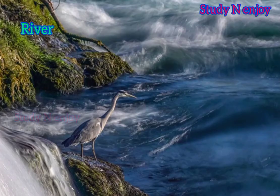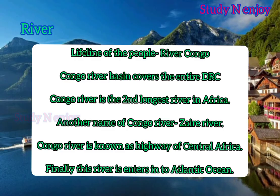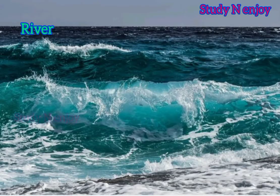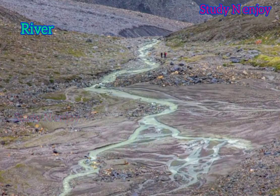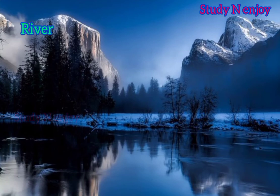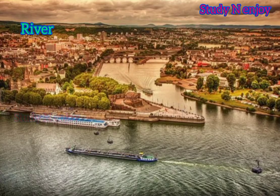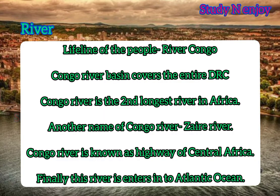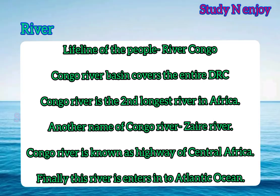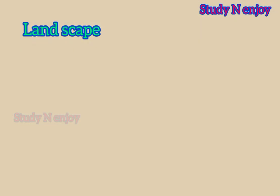The River Congo is the lifeline of the people of the DRC. The Congo River basin covers the entire country. The Congo River is the second longest river of Africa and is also known as the Zaire River. It is a big and important river in the world. A major part of the DRC lies in the basin of the Congo River. The northeastern part of the DRC is mountainous, and the source of the Congo River is in the highlands of the East African Rift. This river is also known as the highway of Central Africa, and it finally enters the Atlantic Ocean.